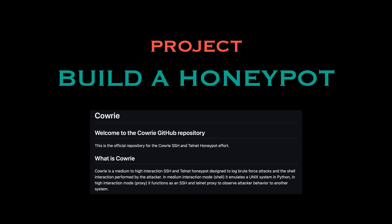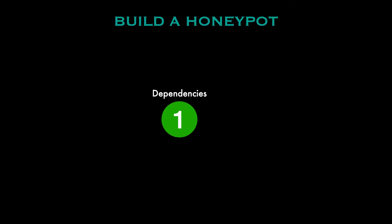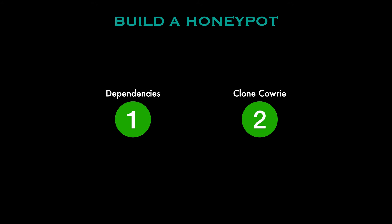Let's talk about the steps to building this honeypot. Step number one is dependencies. Before installing Cowrie you need to make sure the server you're using has the necessary dependencies — the libraries and tools that Cowrie relies on to function properly. Then head to the GitHub links below to clone Cowrie's source code, which will pull all the Cowrie codebase into your server so you have everything you need to set up the honeypot.